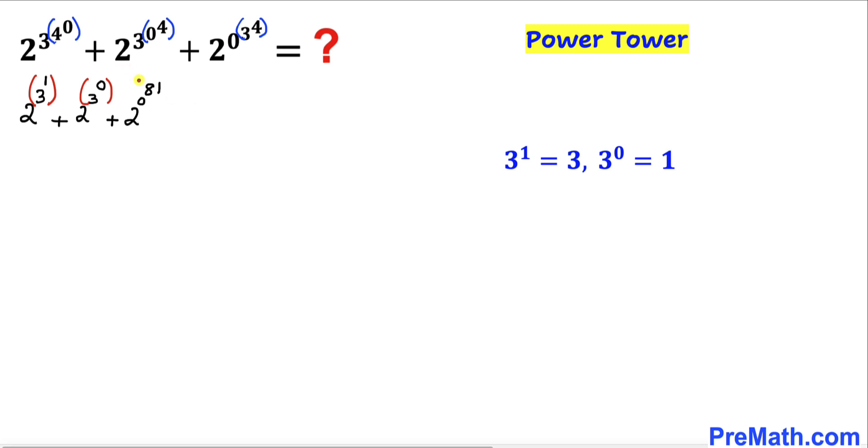And finally let's focus on 0^81. We know that 0^81 is same as 0. Therefore, this could be written as 2^3 + 2^1 + 2^0.